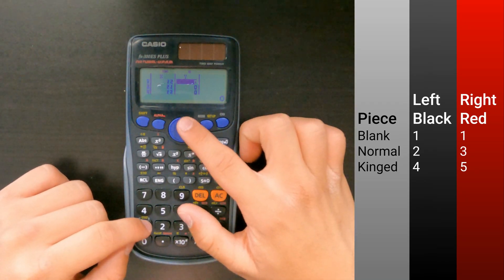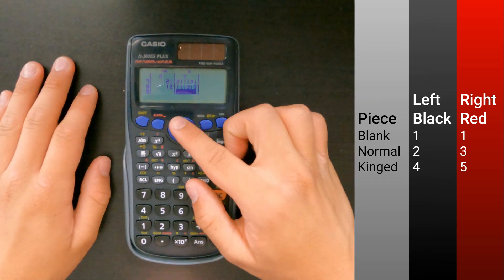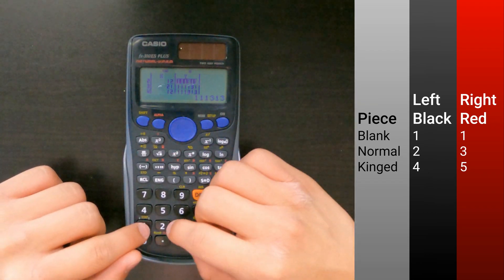Checkers is played on an 8x8 board with one being blank, two being the player on the left, and three being the player on the right. Four and five stand for kinged pieces.